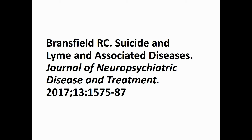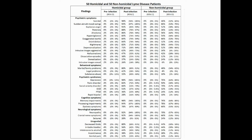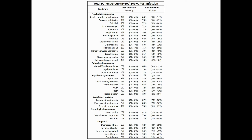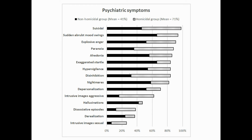A prior study showed 26% of suicidal Lyme patients were also homicidal. When comparing homicidal to non-homicidal patients, there was a greater prevalence of multiple impairments associated with homicidal risk. The 100 patients analyzed were quite healthy pre-infection, but had significant impairments post-infection. All of the psychiatric symptoms evaluated were greater in the homicidal patients.